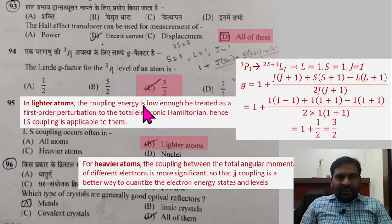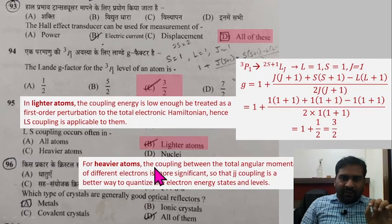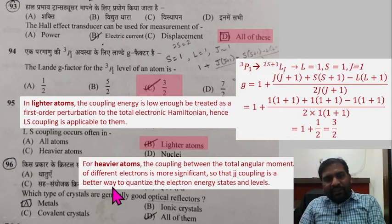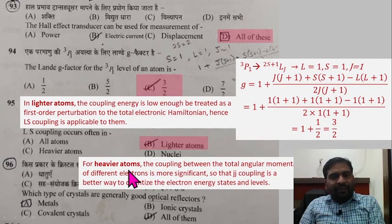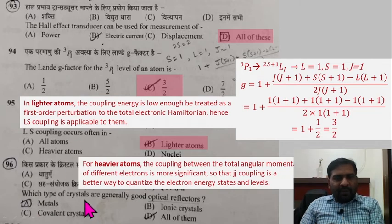Question 95: LS coupling occurs often in lighter atoms. In lighter atoms, the coupling energy is low enough to be treated as a first-order perturbation to the total electronic Hamiltonian, so LS coupling is applicable. For heavier atoms, the coupling between total angular momenta of different electrons is more significant, so JJ coupling is a better way to quantize electron energy states. Lighter atoms: LS coupling; heavier atoms: JJ coupling.